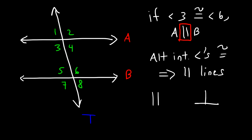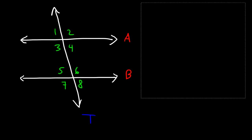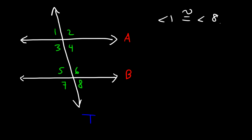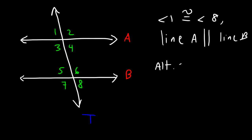The next thing we need to talk about is alternate exterior angles. Angles 1 and 8 are alternate exterior angles. If these two angles are congruent, then line A is parallel to line B. You can write it this way: if the alternate exterior angles are congruent, then the lines will be parallel.